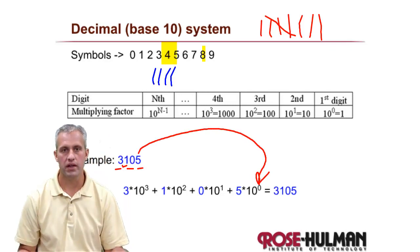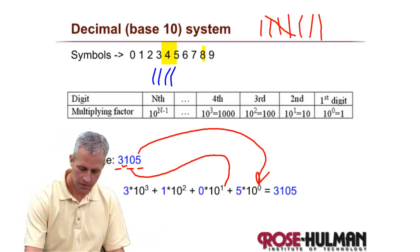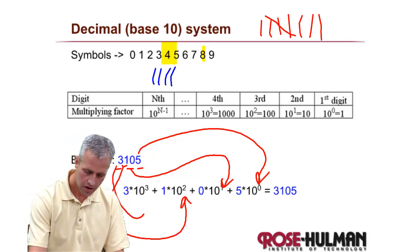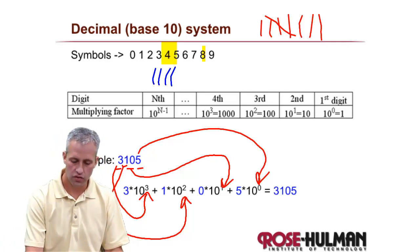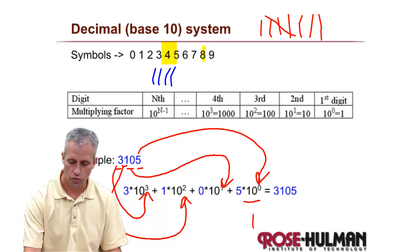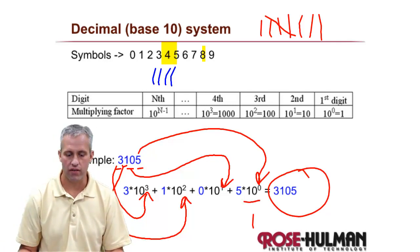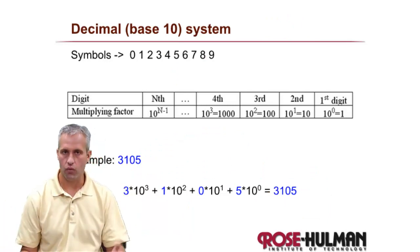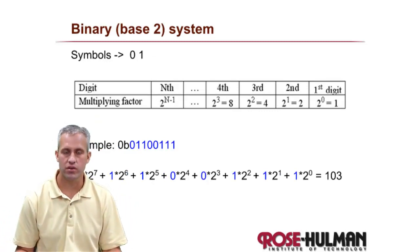The multiplying factor for the lowest location is the base raised to the power of zero, then 10 to the first, 10 to the second, and so on. So you can break down a number like 3105 as: 3 times 1000, 1 times 100, 0 times 10, and 5 times 1, and add it back up to get 3105. When dealing with decimal it's easy, but understanding how it works is important for other number systems like binary.